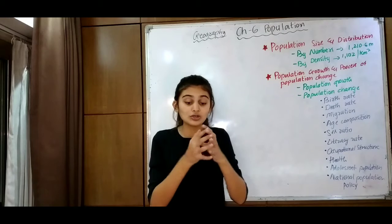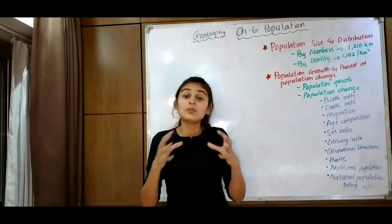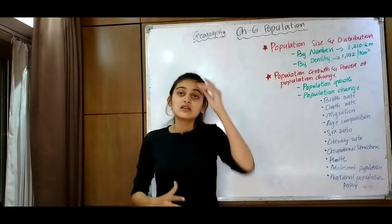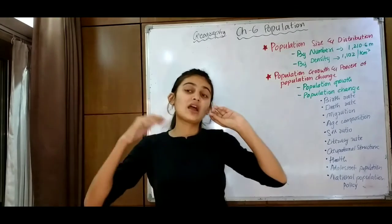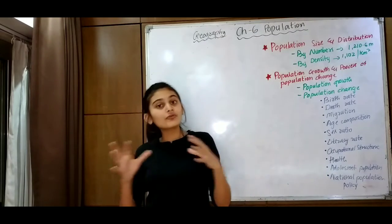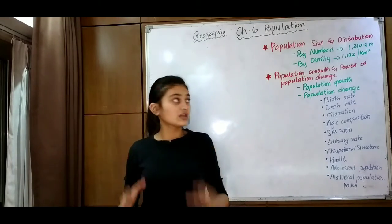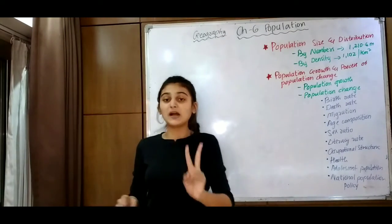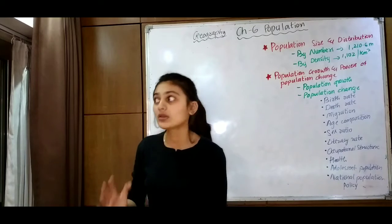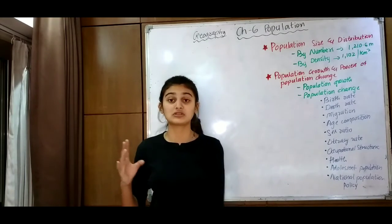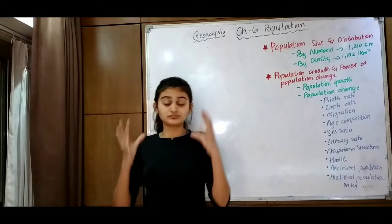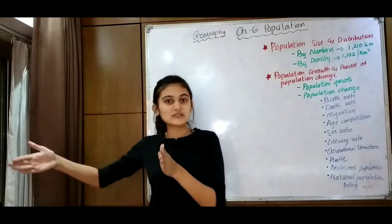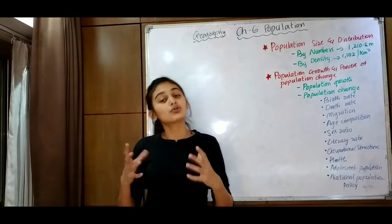Then comes population by density, which means the number of people per square kilometer. This number varies from place to place and area to area. In India, the overall density is approximately 382 people per square kilometer. India is a very highly populated country, and the density varies significantly between states like Uttar Pradesh and Sikkim.